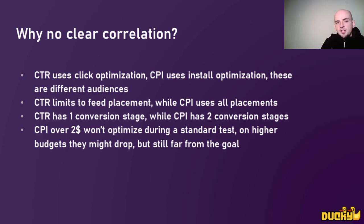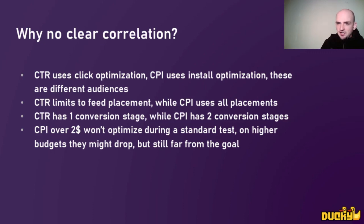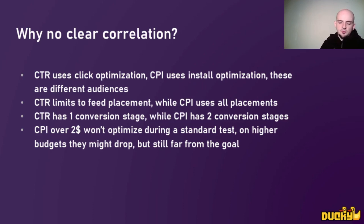The second reason is that when we do CTR — and most publishers do CTRs — they use feed placement only, and there is a reason for that. Feed placement is the standard for CTR tests. But when we use a CPI test, we use all placements; it doesn't matter, we search for the best one. And there is a huge difference between feed and Facebook Audience Network placements — we'll talk about it later.